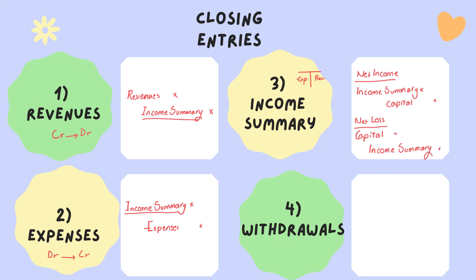The fourth closing entry is to close withdrawals. Withdrawals' normal balance is debit. To close withdrawals, I'm going to credit this account. The entry will be capital on the debit side to withdrawals on the credit side.